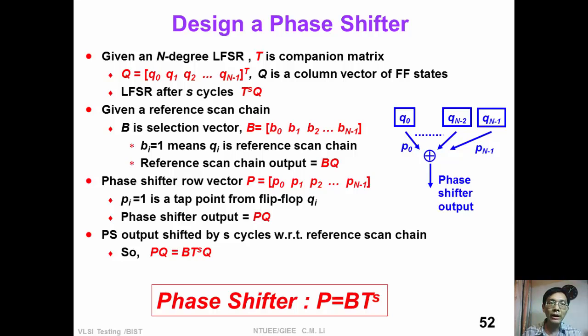So how can we design a phase shifter? In this problem, we are given an n-stage LFSR where T is the companion matrix. We have the column vector Q, which represents the state of FSR.